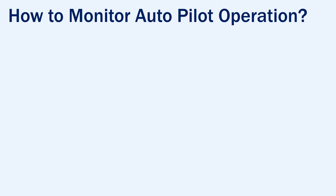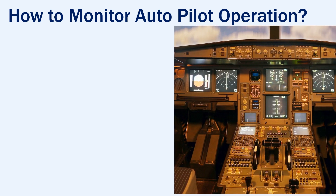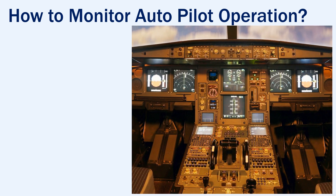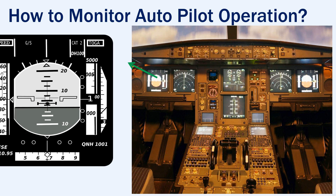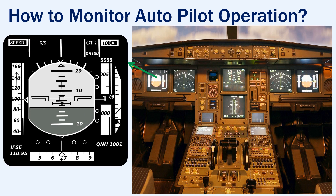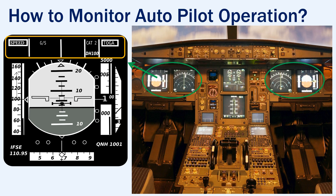How to monitor the autopilot operation? After the autopilot is engaged, it will inform the pilots on how the aircraft is being flown through the flight mode annunciator or the FMA. The FMA is located on the top of the primary flight display or PFD, and is something that the pilots should monitor throughout the entire duration of the flight, along with the information on the PFD and the navigation display.